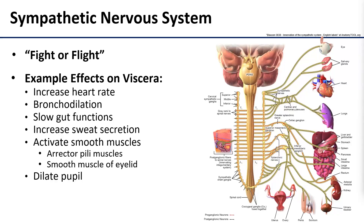Sympathetics are often referred to as the fight or flight system because it produces changes in the body that allow you to expend energy. So it does things like increase heart rate, dilate the bronchi to allow more oxygen into the bloodstream, it actually slows down the gut to redirect that energy elsewhere, and it increases sweating. It also does a few things that aren't specifically energy related, like innervating the smooth muscles of the eye and the erector pili muscles in the skin. None of these things are strictly linked only to fighting or flighting — they happen for plenty of other reasons as well. But that phrase 'fight or flight' really does a great job of conjuring up that image, so it's a really handy mnemonic for remembering sympathetic function.